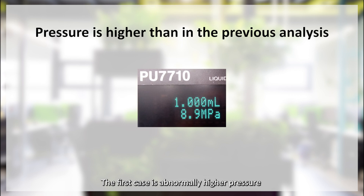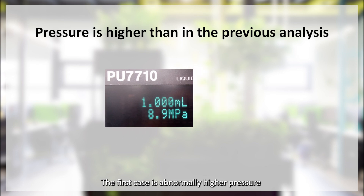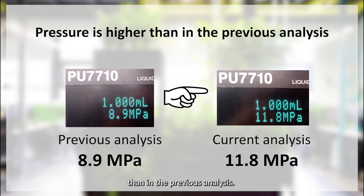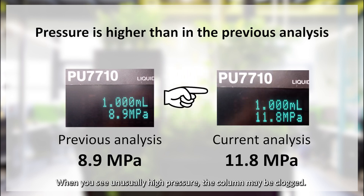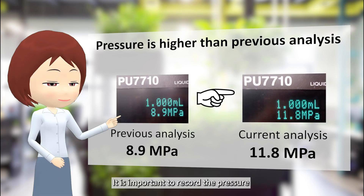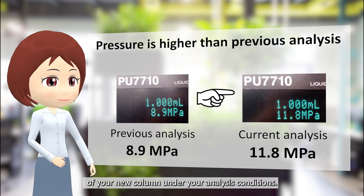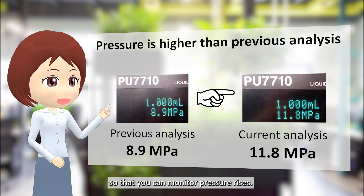The first case is abnormally higher pressure than in the previous analysis. When you see unusually high pressure, the column may be clogged. It is important to record the pressure of your new column under your analysis conditions so that you can monitor pressure rises.